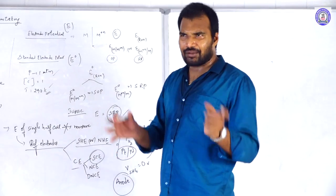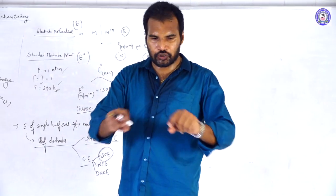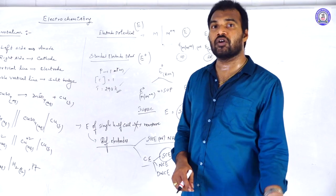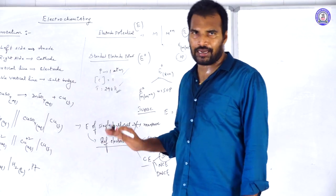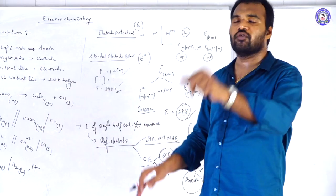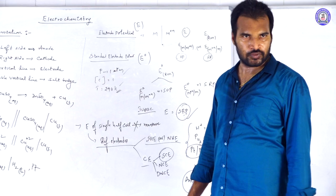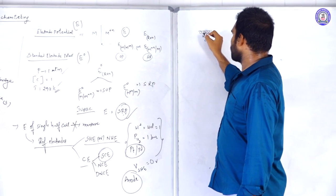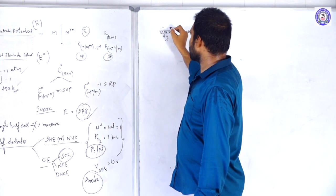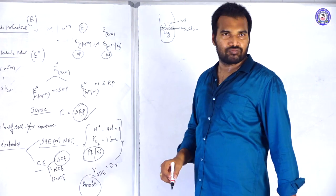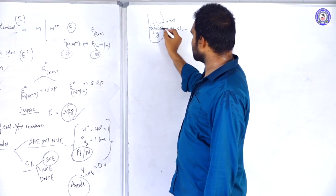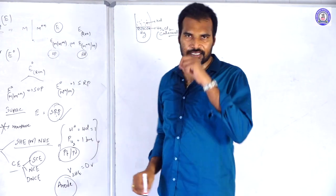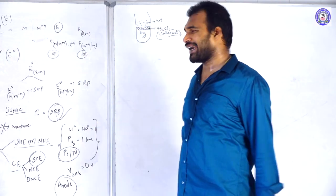The calomel electrode consists of mercury covered with mercury chloride (Hg₂Cl₂) — this is what we call calomel — and Hg₂Cl₂ is in contact with a KCl solution, housed in a platinum tube, acting as the calomel electrode.